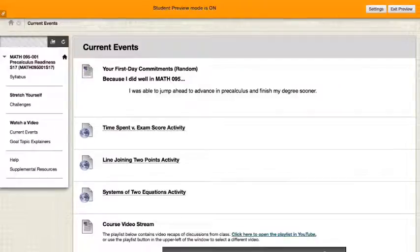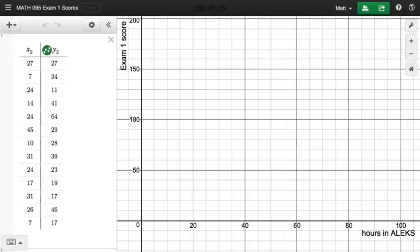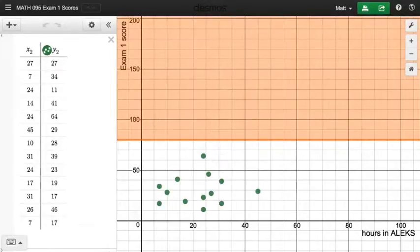What I've done is I've taken that data from the semester and summarized it in the first of the links that you see here on the front of Blackboard. It's called Time Spent versus Exam Score Activity. So if you jump into that, what you'll see that pops up is a data set.